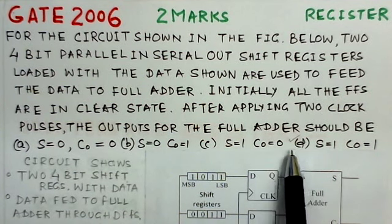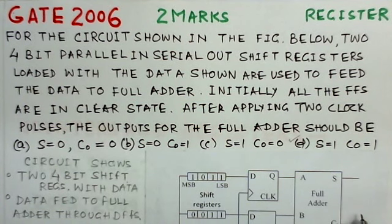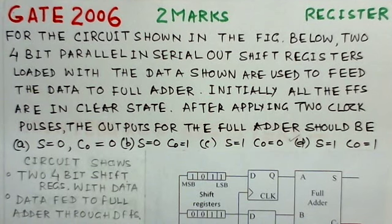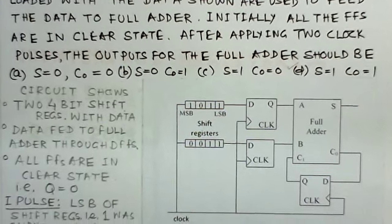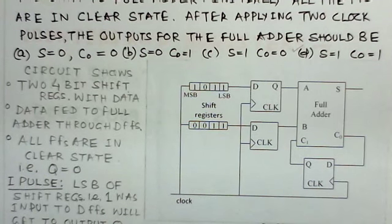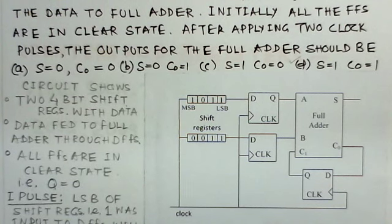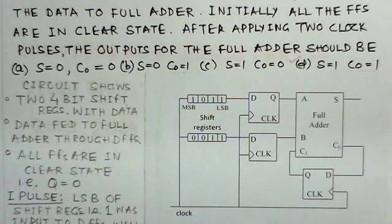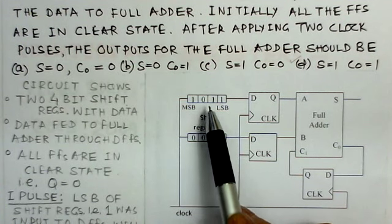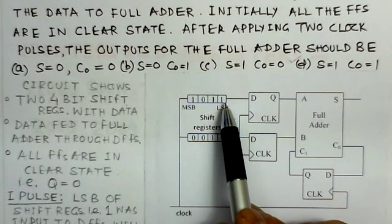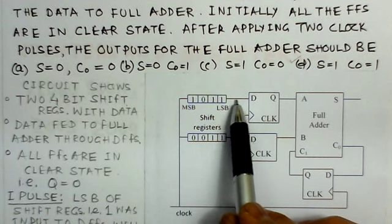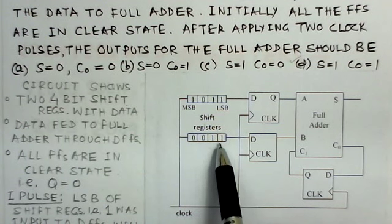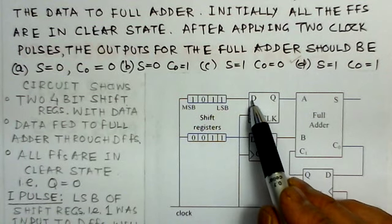Looking at the circuit, we can see the complete circuit consists of two 4-bit shift registers. These shift registers are of the parallel-in serial-out type, meaning data can be fed to the registers in parallel but is taken out bit by bit from these registers. They are loaded with the data shown.